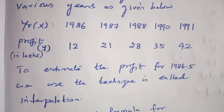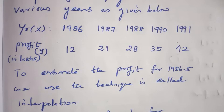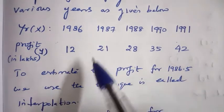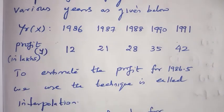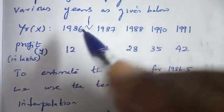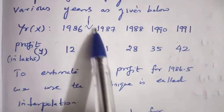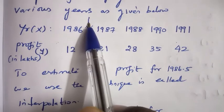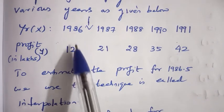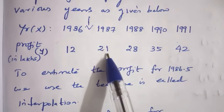In the definition of interpolation, we have to estimate the profit for 1986.5. Suppose the year 1986.5 lies between 1986 to 1987. This is known as interpolation. In the year 1986, the profit is 12 lakhs. And 1987, the profit is 21 lakhs.